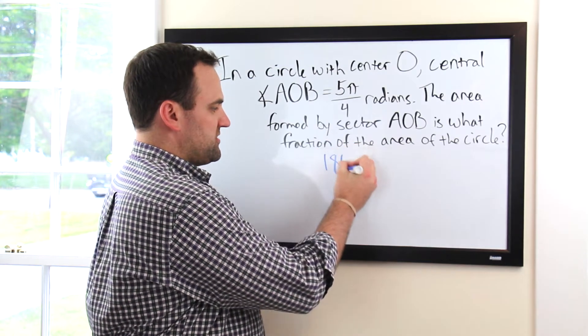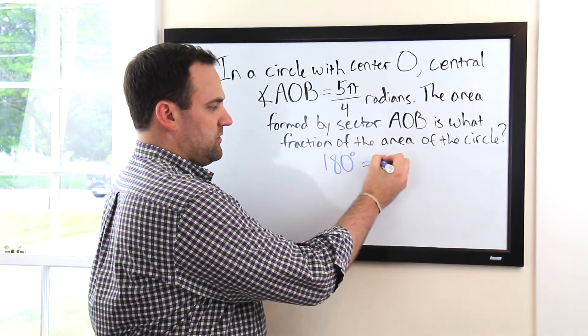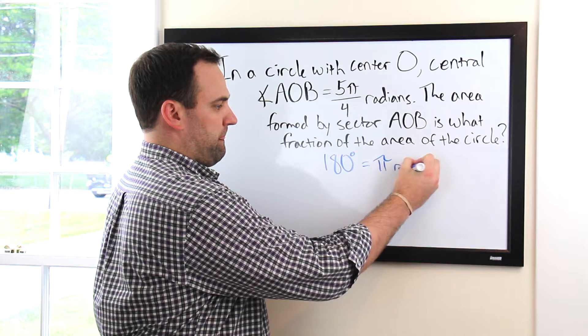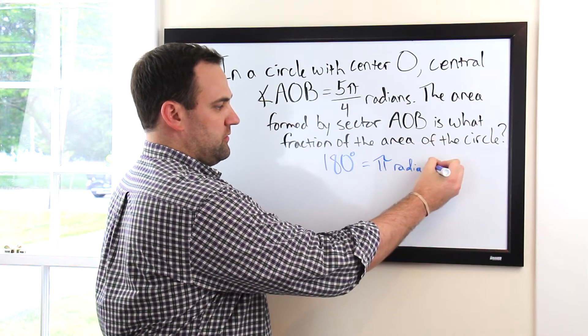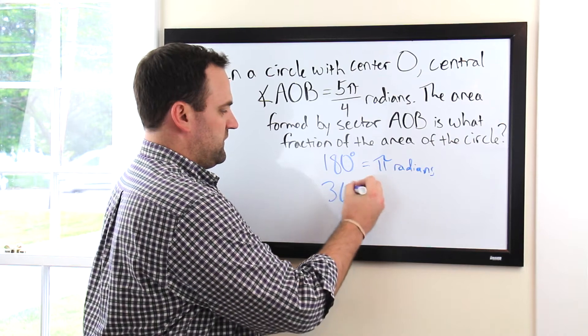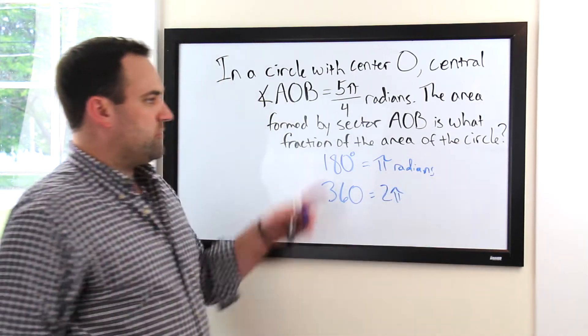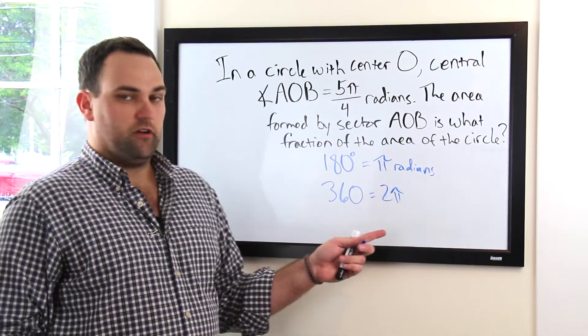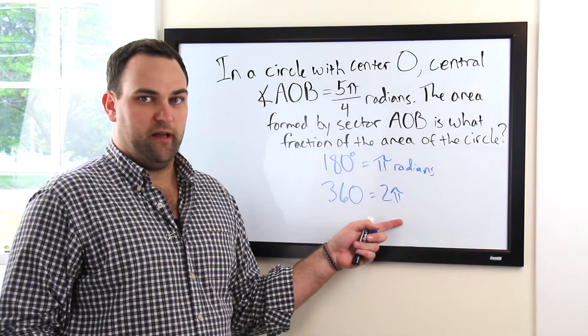Alright, you're familiar with degrees. So, 180 degrees equals π radians. Therefore, 360 degrees equals 2π. So whenever we're working with a circle, the measure of all the angles of that circle are 2π.